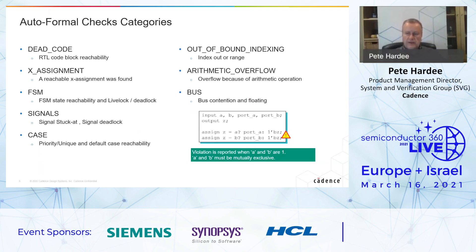We have a bus contention example here. It's very important that two ports or two inputs A and B are not driving the bus at the same time — they have to be mutually exclusive. The check produces a violation if that's not the case.